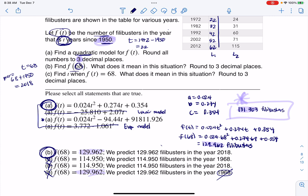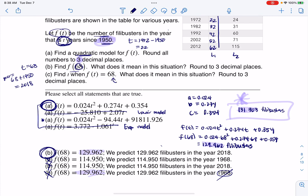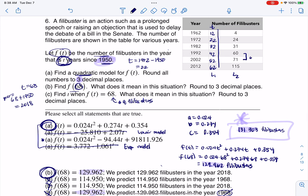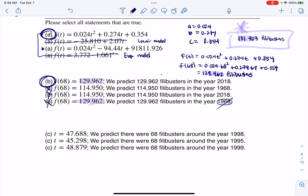So if we look at C, it says find the T value when F(T) is 68. We now want to find out when we had 68 filibusters. Just looking at my Y values that was given, 68 is somewhere in between here. Since 68 is closer to 71, I think the year we're going to get is going to be closer to 2002 than it is to 1992. That would be a decent guess that it's somewhere in between 1992 and 2002. Looking at my answers, I don't think it's going to be this one because 1995 is closer to 1992 than it is to 2002. My guess is I think it'll be this one or this one. So I really need to decide, is it 47.688 or is it 48.879?